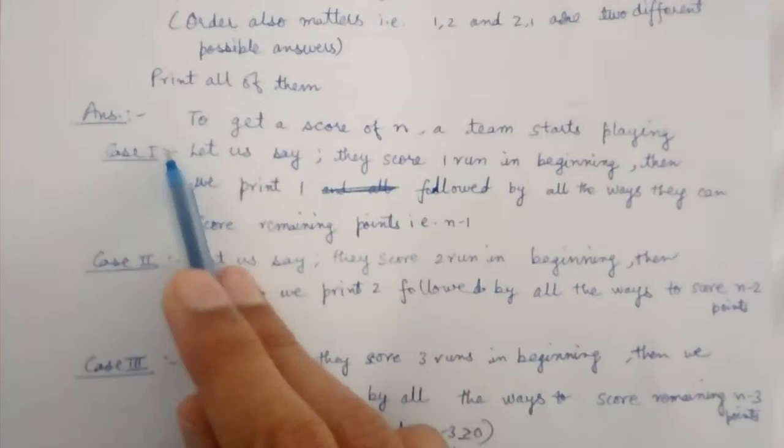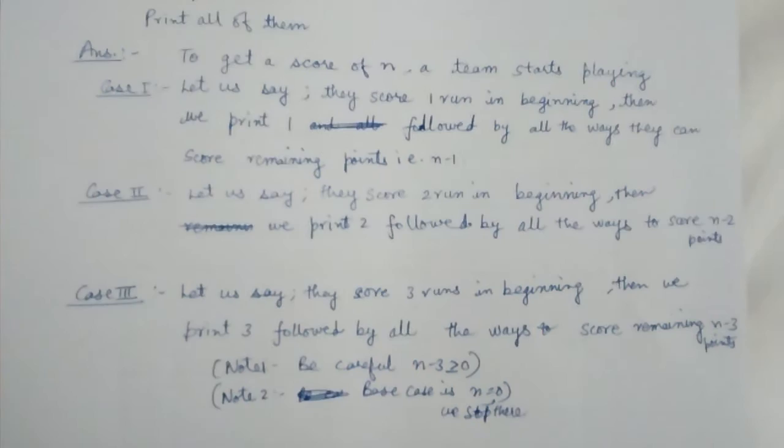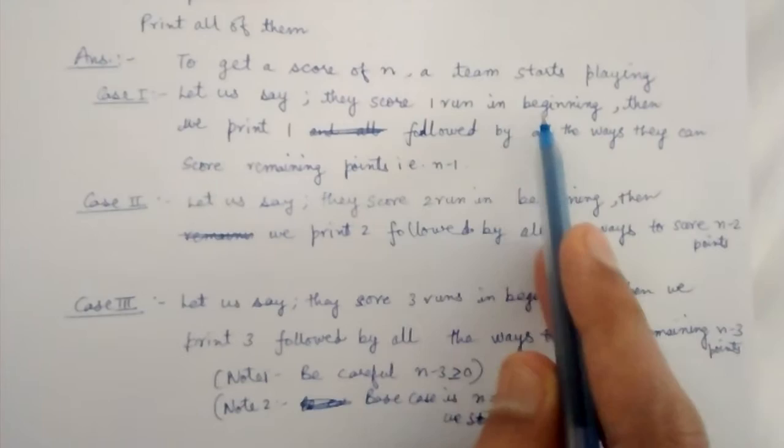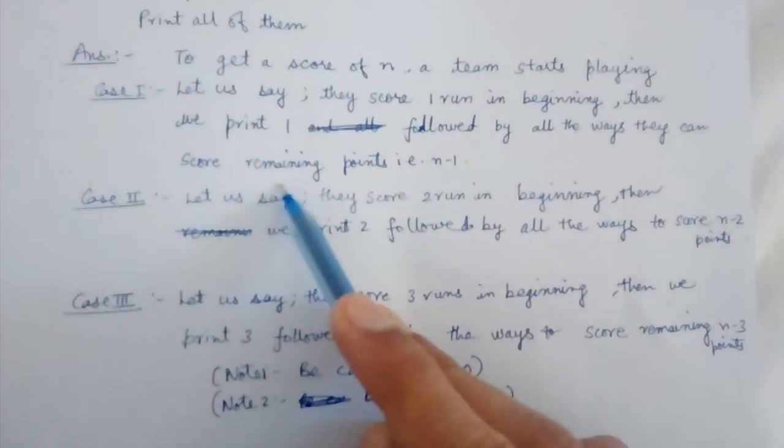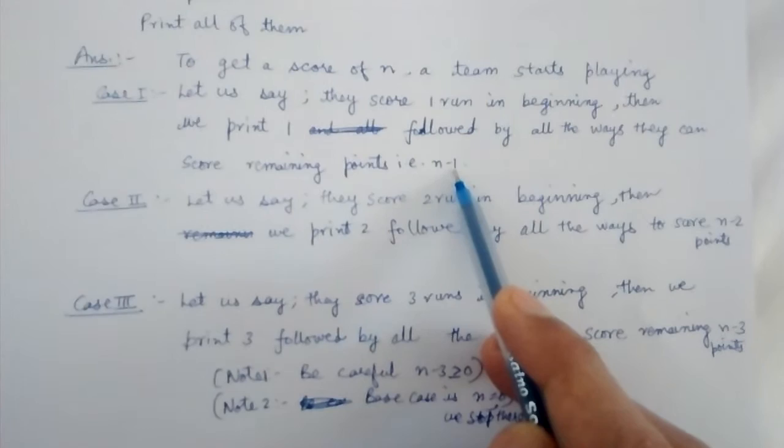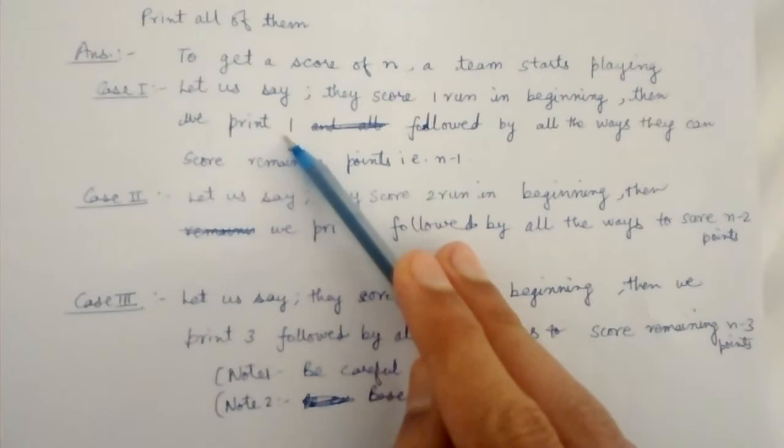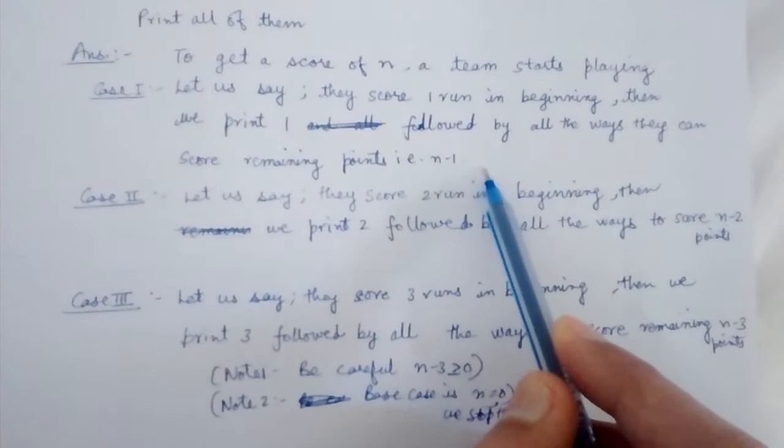To get a score of N, a team starts playing. Let us say they score one run in the beginning. That is, their first score is a score of 1. Then we print 1 followed by all the ways they can score remaining points, that is the N-1 remaining points. Actually, we do not print 1 just now. So what we do is we store 1 in an array and call all my children.